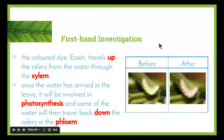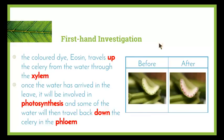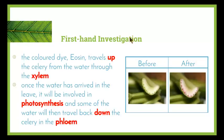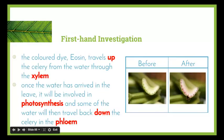For the first-hand investigation, we use celery and a colored dye — either Eosin or food coloring. The dye travels up the celery from the water through the xylem. Water and dissolved particles, including the food coloring, are drawn up through the xylem. Once in the leaves, the water is involved in photosynthesis and some travels back down through the phloem. The dark red dots show xylem vessels and the smaller red dots show phloem.